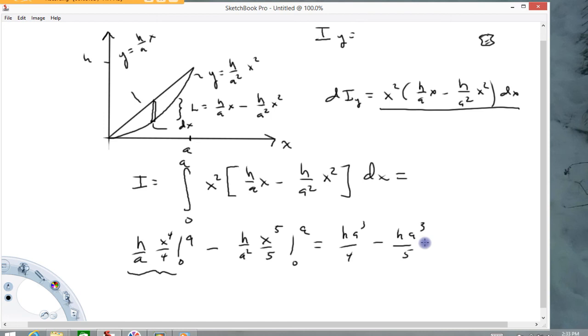And these are like terms. Common denominator is 20. So we're going to have five times this guy minus four times this guy over 20. So we're going to have ha to the third over 20. And that thing's done.